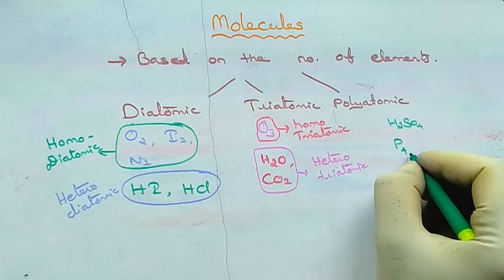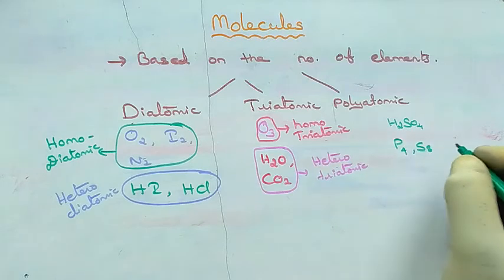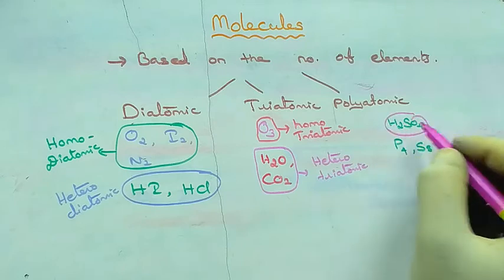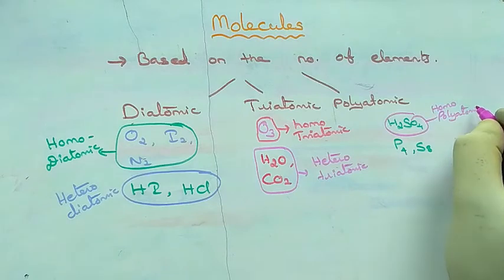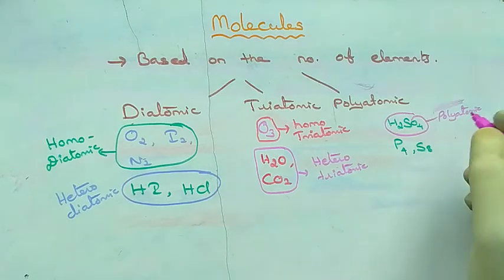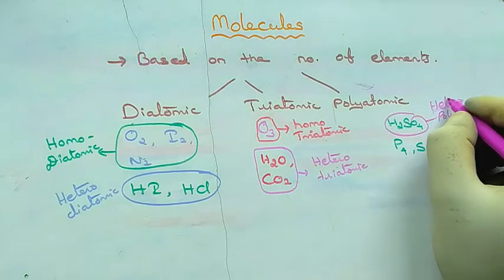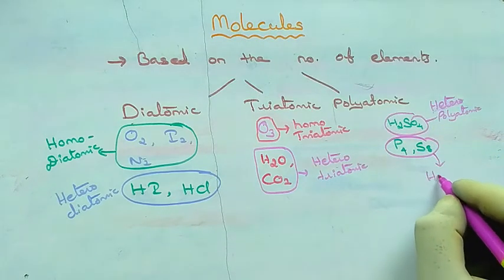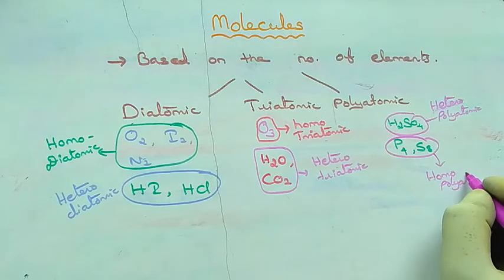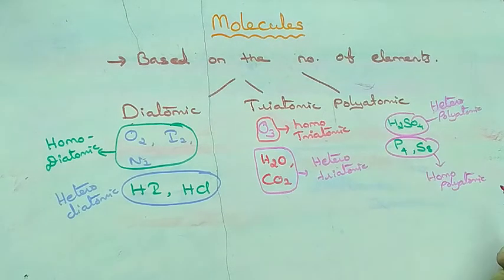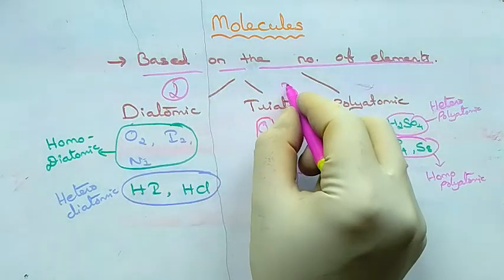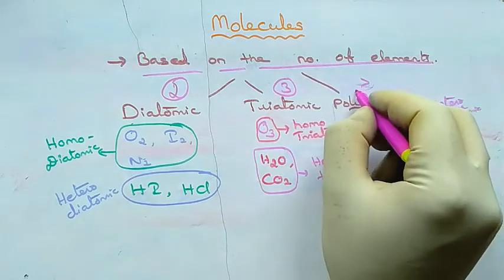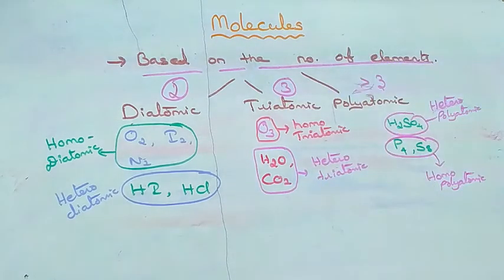For polyatomic molecules: any molecule with more than three atoms is called polyatomic. H2SO4 is an example of hetero-polyatomic, while phosphorus and sulfur are examples of homo-polyatomic. These are the three types of molecules based on number of elements: diatomic for two, triatomic for three, and polyatomic for more than three elements.